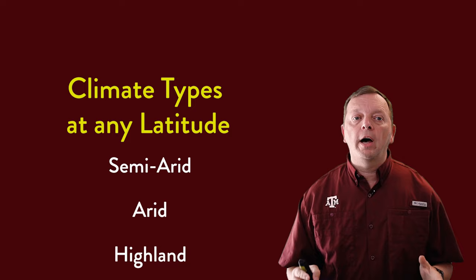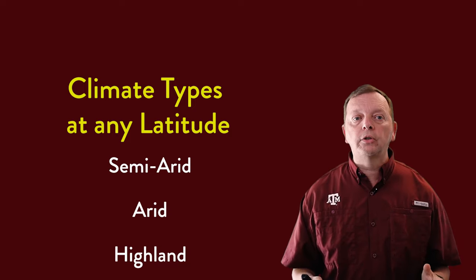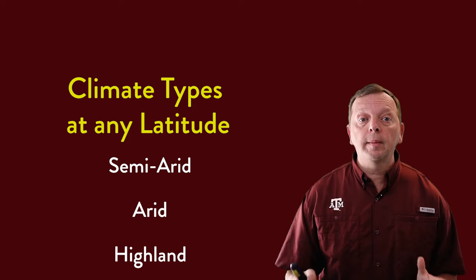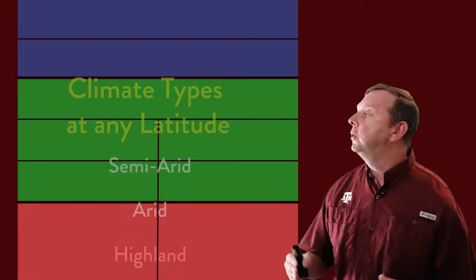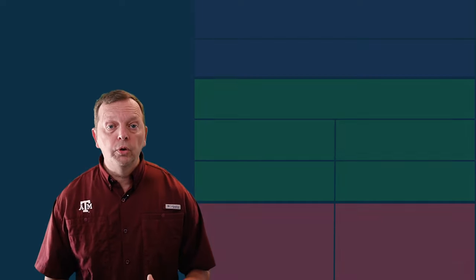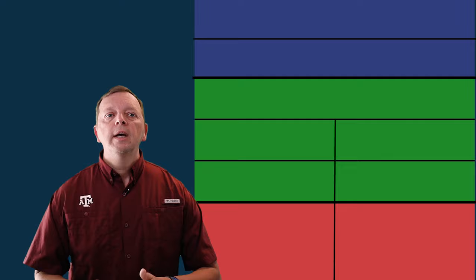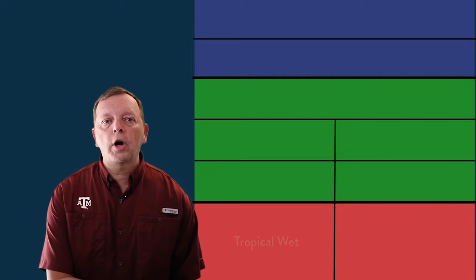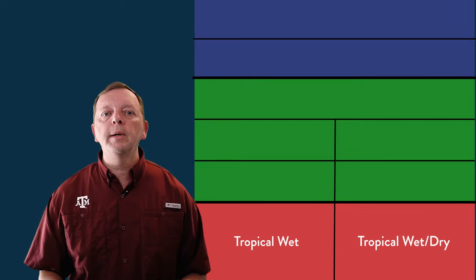There are three other climate zones — the semi-arid, arid, and highland climates — that can be found at any latitude. To help us understand these climate zones, we'll be using a graphic organizer. So let's begin at the equator and make our way towards the poles. The low latitudes, the tropics, is where we find the tropical wet and the tropical wet dry climates.